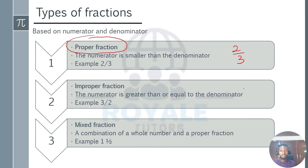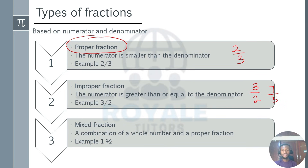We also have the improper fraction. An improper fraction is known by a bigger numerator — that is, when you have 3, which is bigger than 2, or you have 7, which is bigger than 5. So we call this an improper fraction.